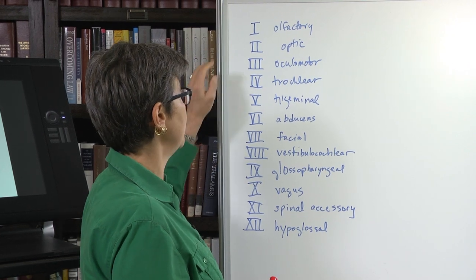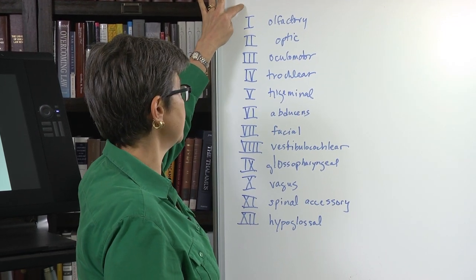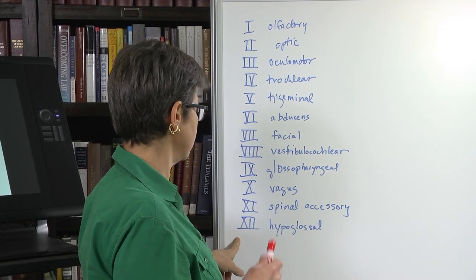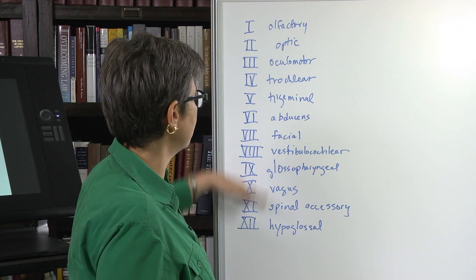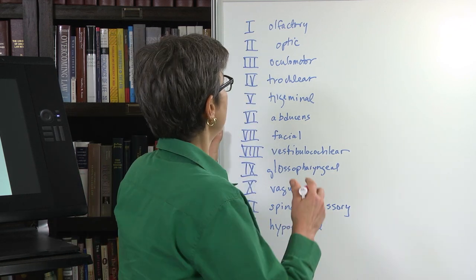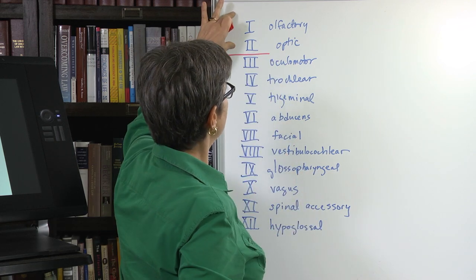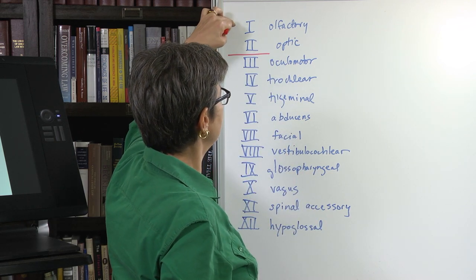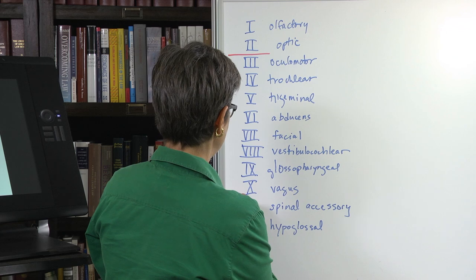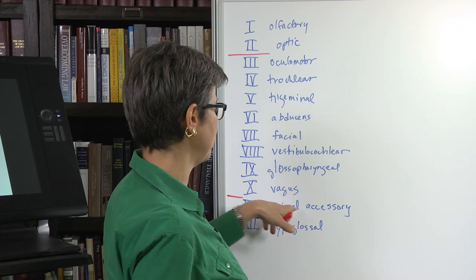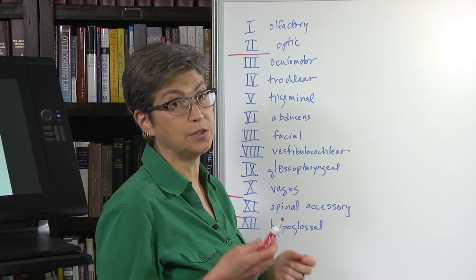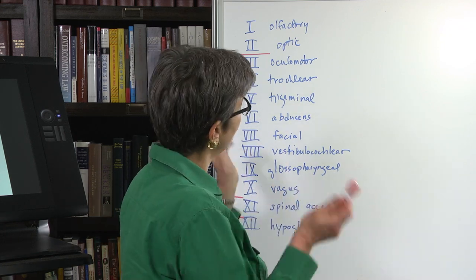So here are the 12 cranial nerves. They have Roman numerals from 1 to 12. The most rostral one is 1, and the most caudal one is 12. It goes from rostral to caudal order. These two come out of the forebrain, the telencephalon and the diencephalon, and the remainder come out of the brainstem with the exception of the spinal accessory that comes out of the spinal cord. But the 3 through 12 are typically the ones that we call brainstem cranial nerves. We're going to go through all of them.